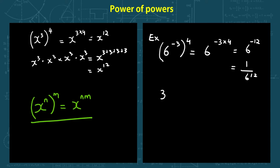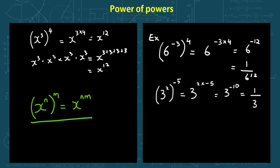Another one: 3 to the power of 2, to the power of negative 5. Let's multiply the powers: 2 times negative 5 gives me 3 to the power of negative 10, which is actually equal to 1 over 3 to the power of 10.